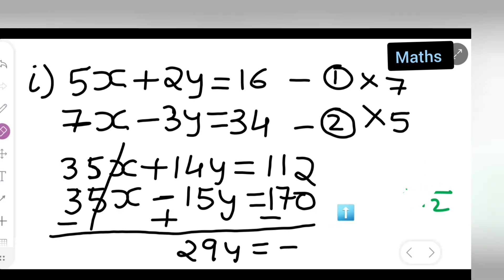So let me rub this and let me subtract and see what we are going to get. So 170 minus 112. So 10 minus 2 will give you 8, 6 minus 1 will give you 5. 58. So I can write down minus 58.